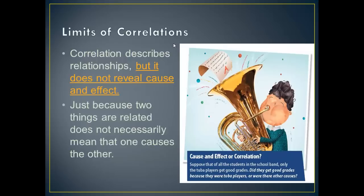Going back to the cigarette example — if the correlation between cigarette smoking and life expectancy were high, does that mean smoking causes shorter life expectancy? Not exactly. The biggest error people make is believing that correlation means A causes B. Correlation does not reveal cause and effect. Just because A and B are related does not mean that A causes B. For example, suppose all tuba players in the school band get good grades. Did they get good grades because they play tuba, or were there other causes — like needing good grades to stay in the band? People at hospitals are usually sick, but going to the hospital doesn't cause sickness.